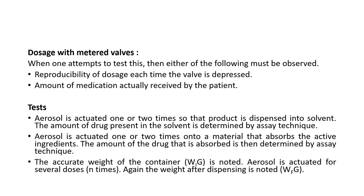When one attempts to test this, either of the following must be observed. Especially in case of meter dose, we know that in one actuation, a particular dose has to be produced. So the first parameter is reproducibility of dosage each time the valve is depressed. If the dose is 5 mg, then in one actuation it should produce 5 mg, and in the second, third, and fourth actuation it should produce the same.